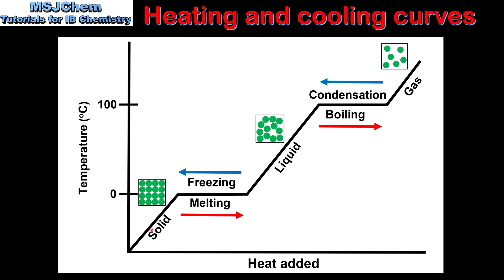As we add heat the temperature increases until we reach 0 degrees C. At this point the ice begins to melt, and we can see that the line becomes horizontal, which basically means that as the ice is melting there is no change in the temperature. The reason for this is that as heat is added, instead of being used to increase the kinetic energy of the particles, it's being used to overcome the intermolecular forces between the water molecules.